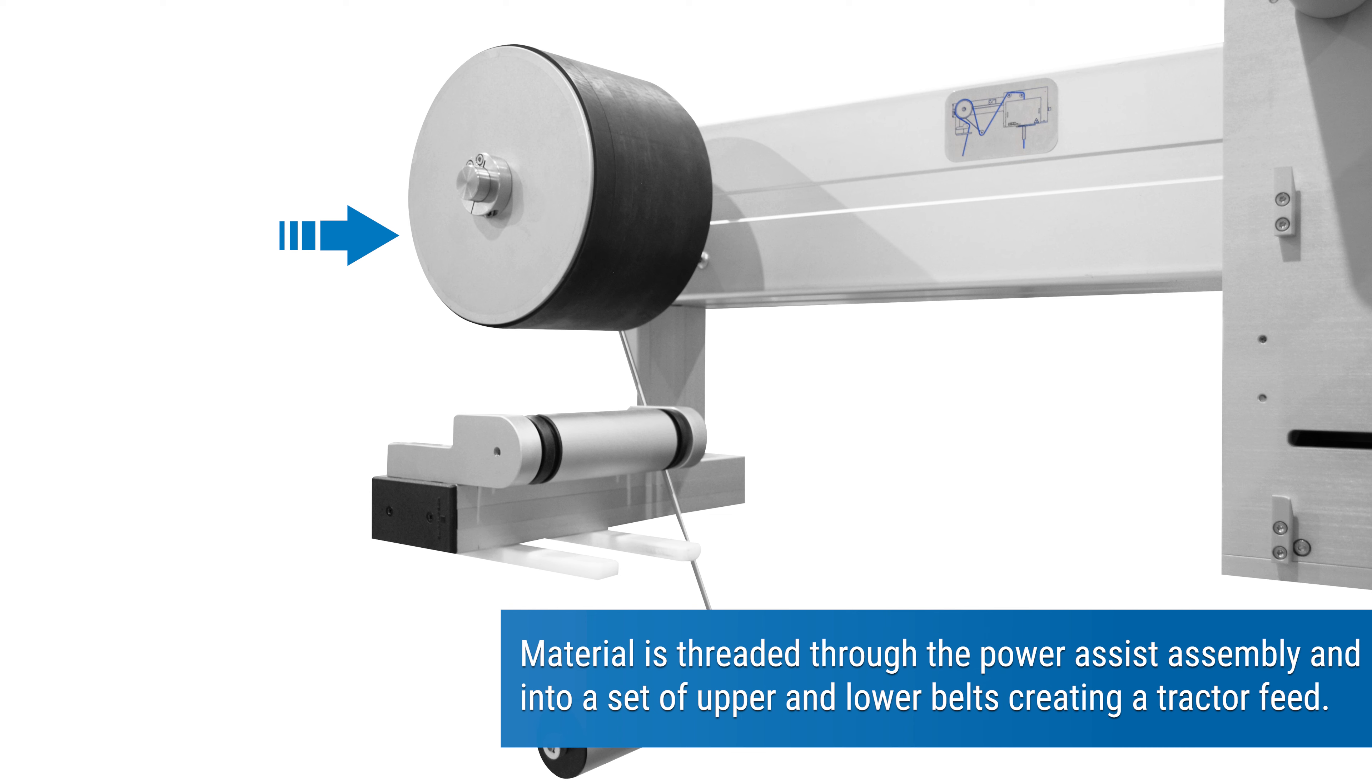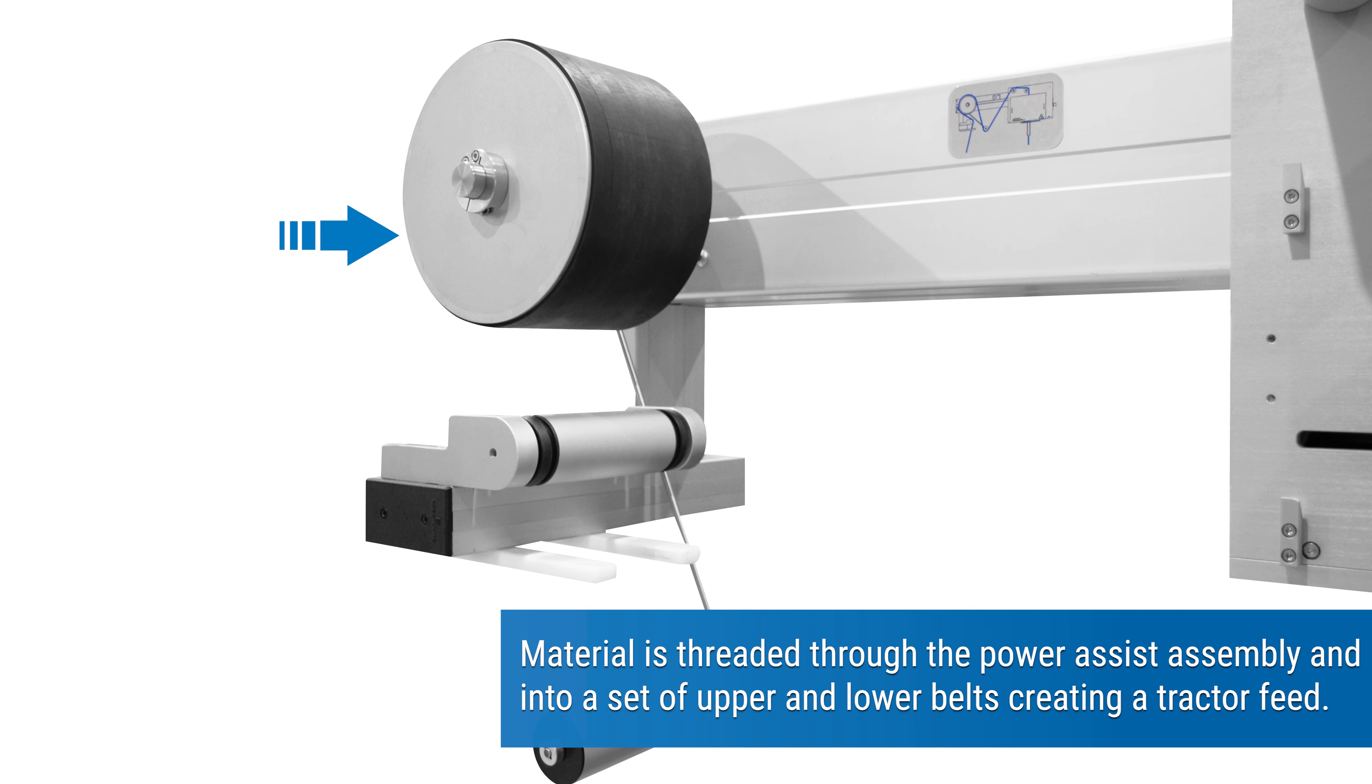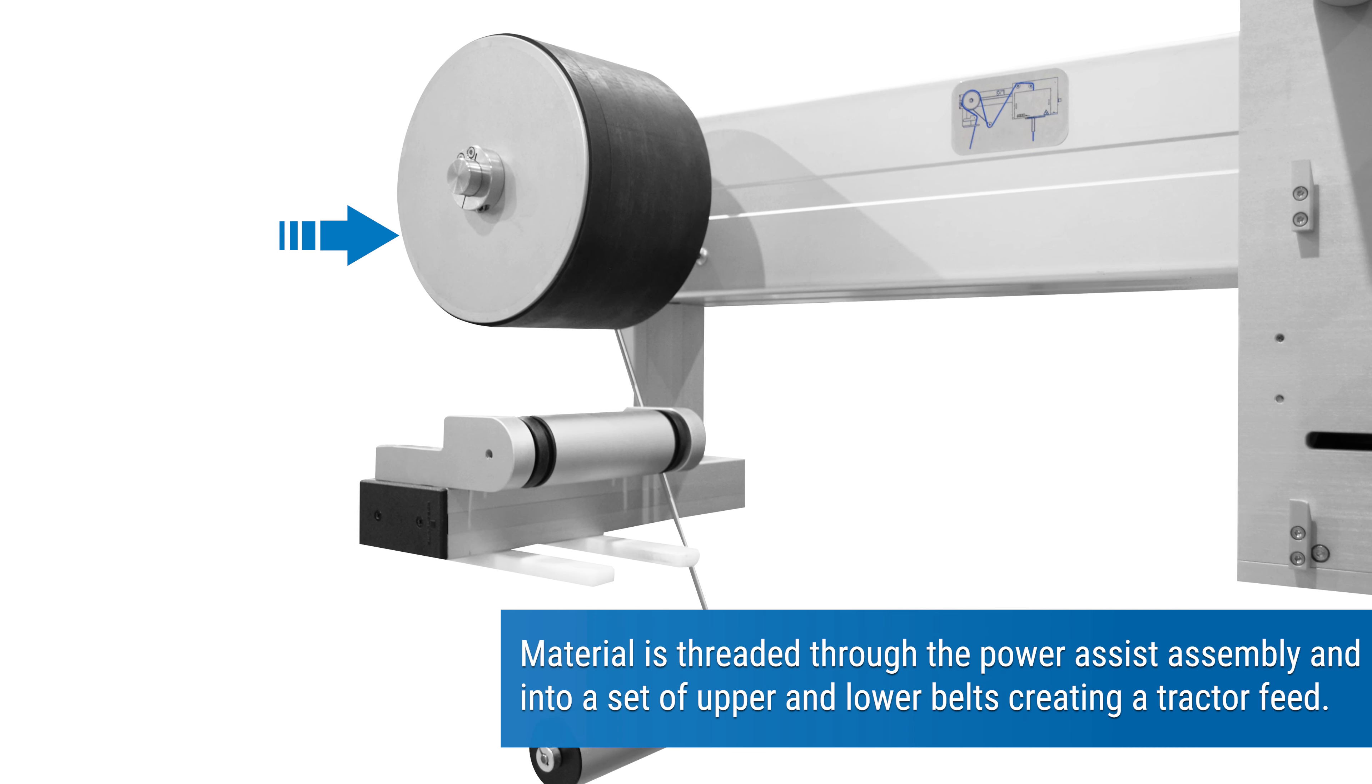Material is threaded through the power assist assembly and into a set of upper and lower belts creating a tractor feed.